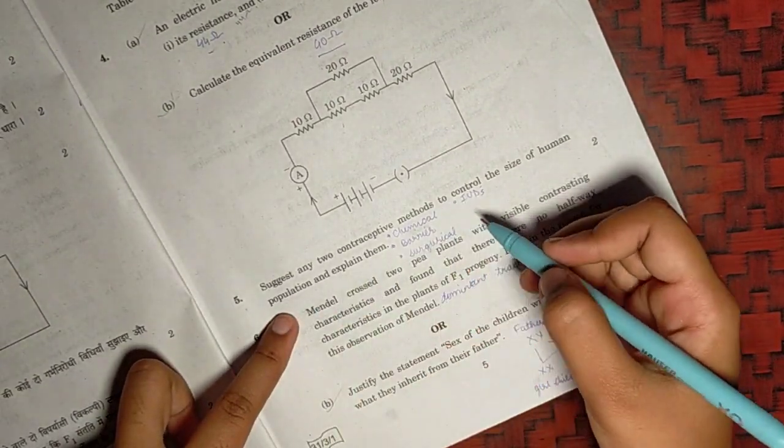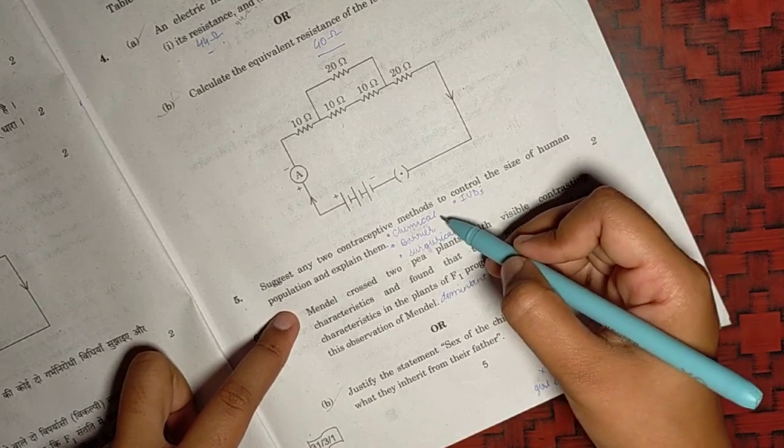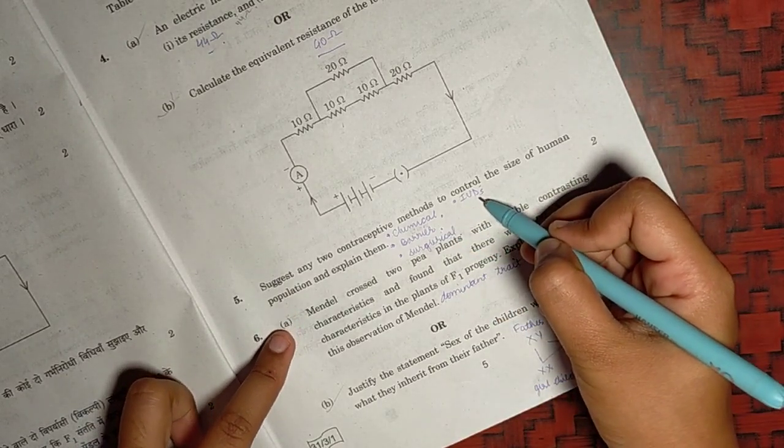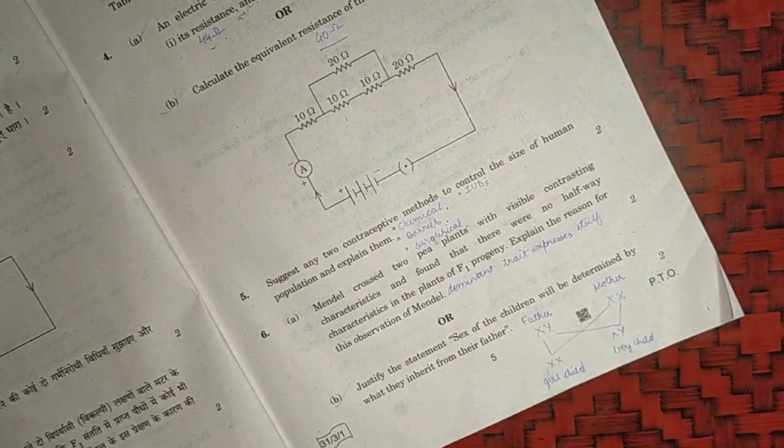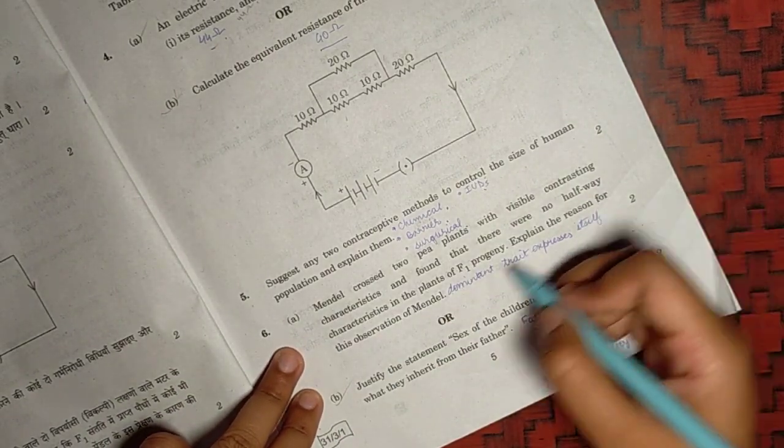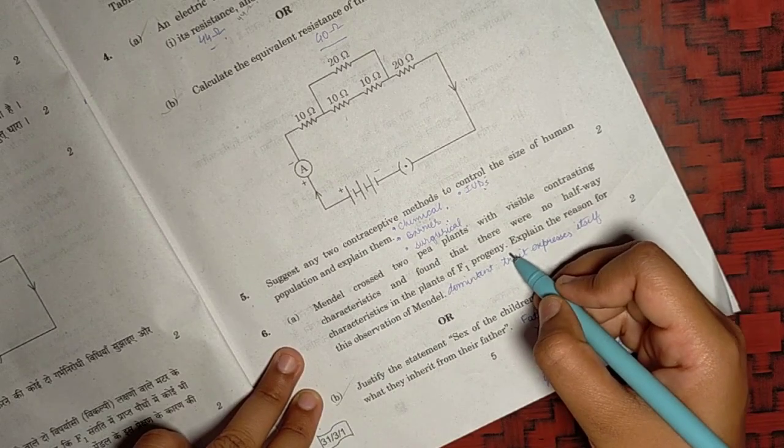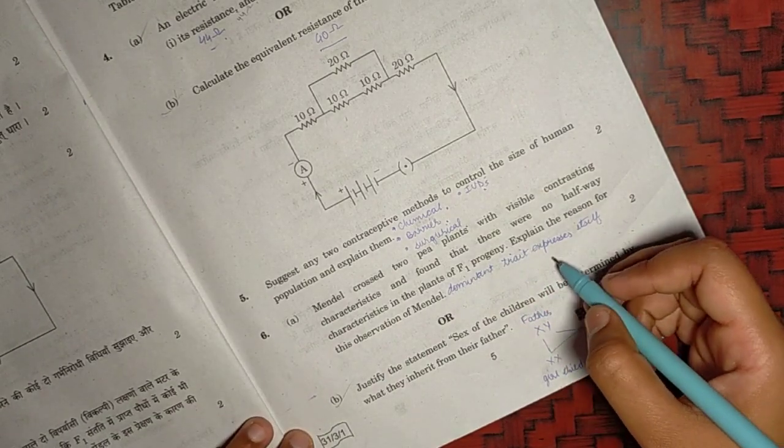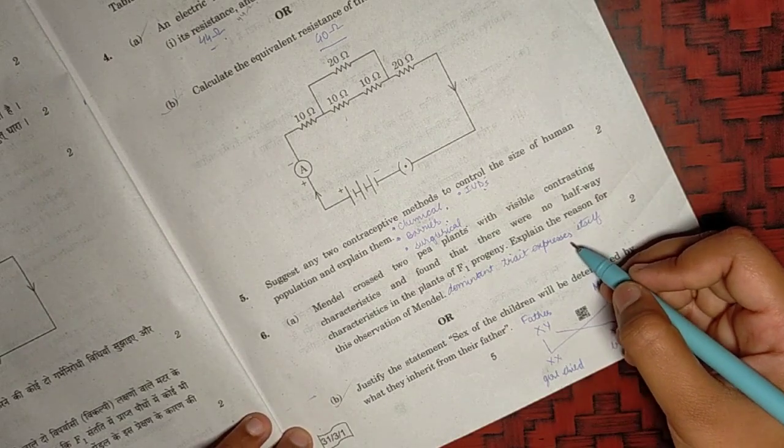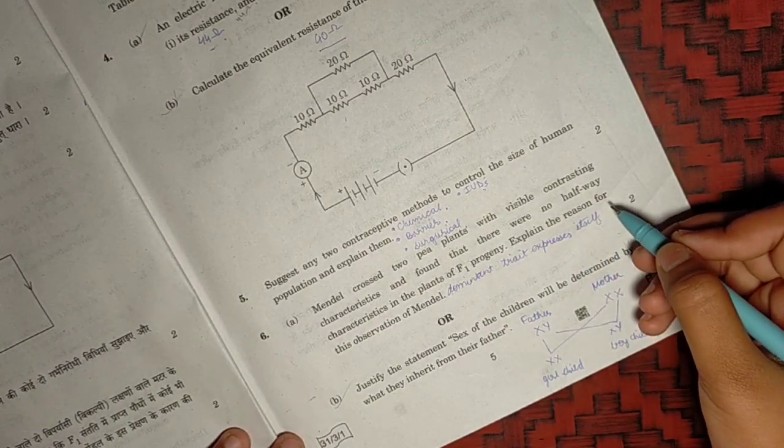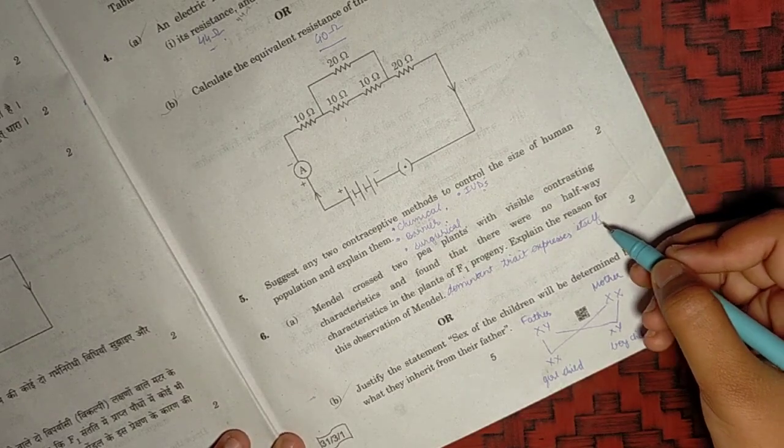For the fifth question, two contraceptive methods. You need to write any one of the four, the chemical, barrier, surgical or the IUDs, intrauterine devices, and explain them as well. For the sixth question, there were no halfway characteristics in F1 progeny. Because when the dominant is present, even in heterozygous condition, it is able to express themselves. Whereas the one which is not able to express themselves is the recessive trait. You can also explain the law of dominance in this one.